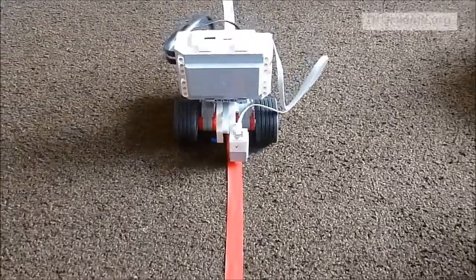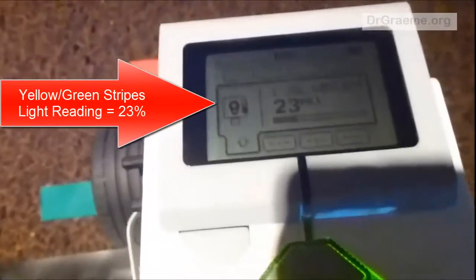But what about the other colors? The green and yellow stripe, we get 23%. And for black, we get 7%.